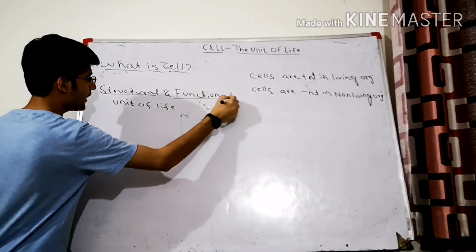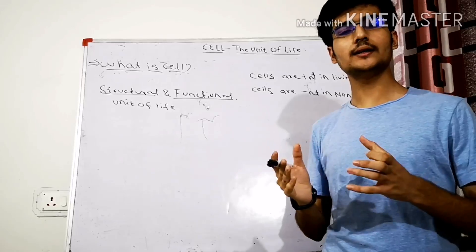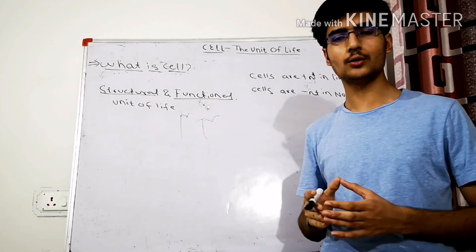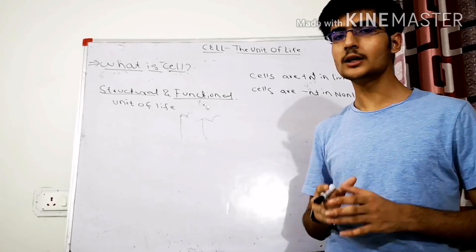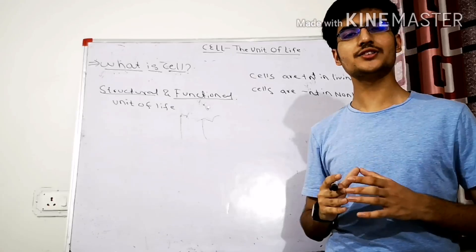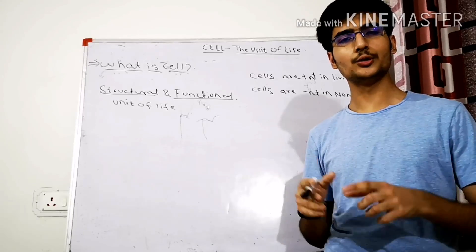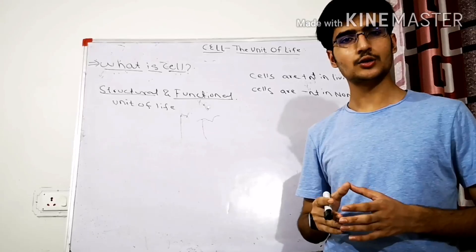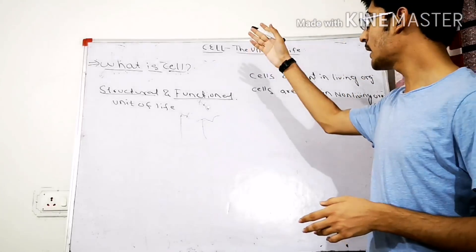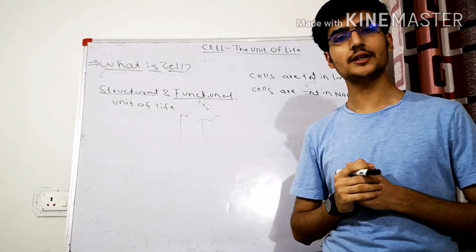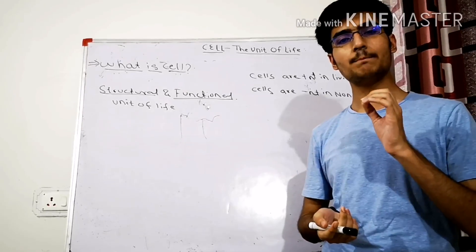Every cell has its own structure — it could be sphere-shaped, cube-like, cuboid-like, columnar or pillar-like. A cell can be of ribbon shape, thread shape, or any shape. Cells have a certain structure and perform a specific function in our body. Cells unite to form tissues, and tissues unite to form organs. The organs perform a certain specialized function in our body. So a cell is the structural and functional unit of life and the most important unit.